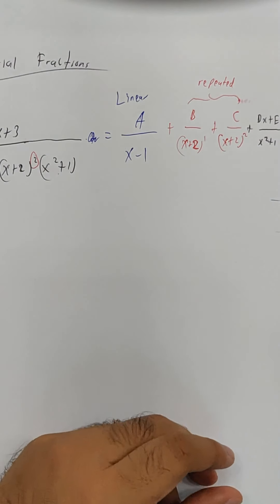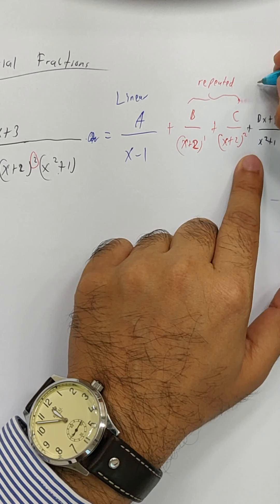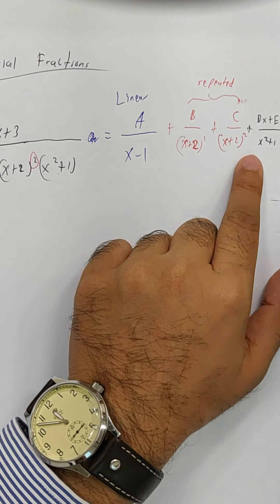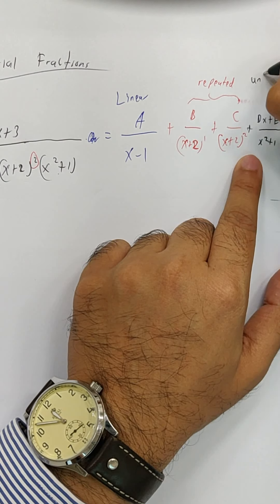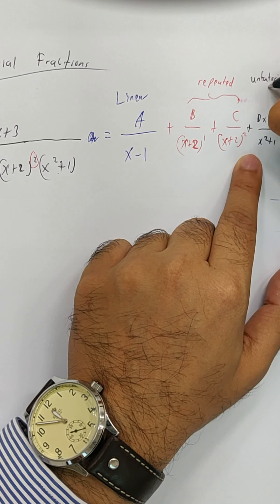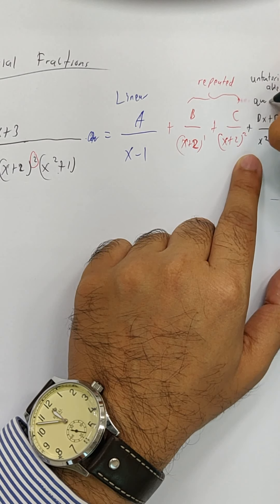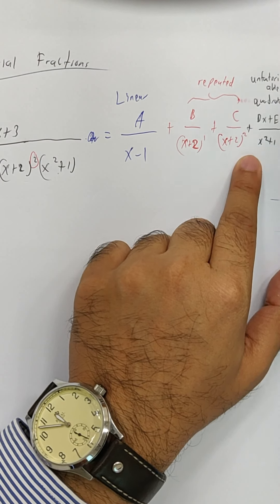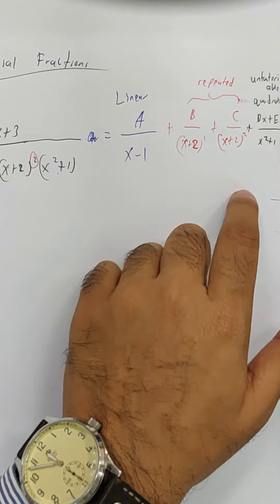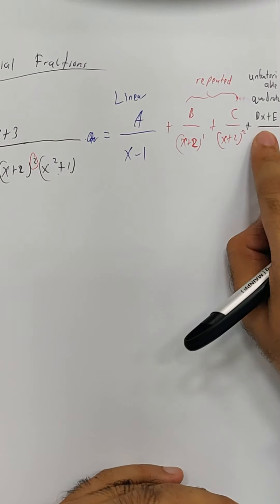Now, this is what I call, not a quadratic, I like to say these words: unfactorizable. Because many people did not see that it's unfactorizable. You can't factorize it, then it becomes something like this.